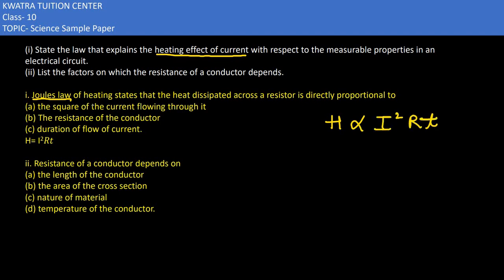And Joule's law of heating states that H is proportional to I² R and t. So you have to mention everything: that square of the current, second the resistance, third the duration of current.